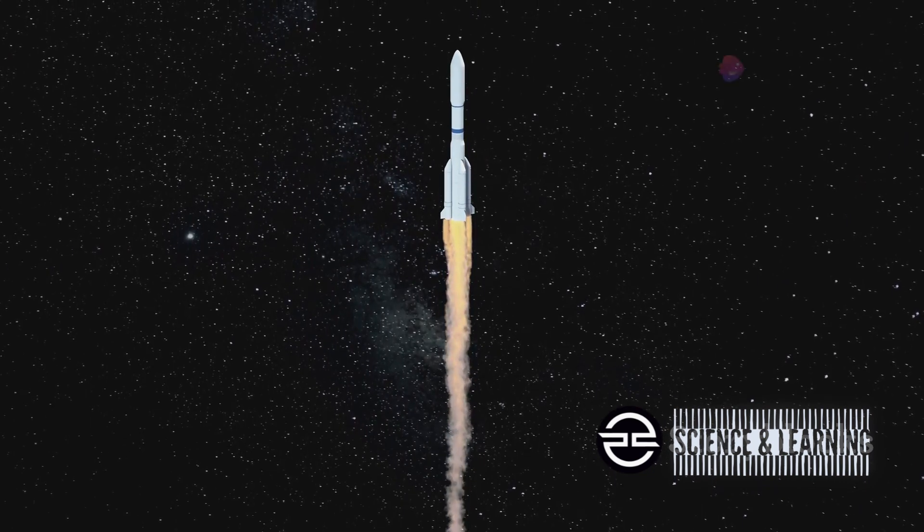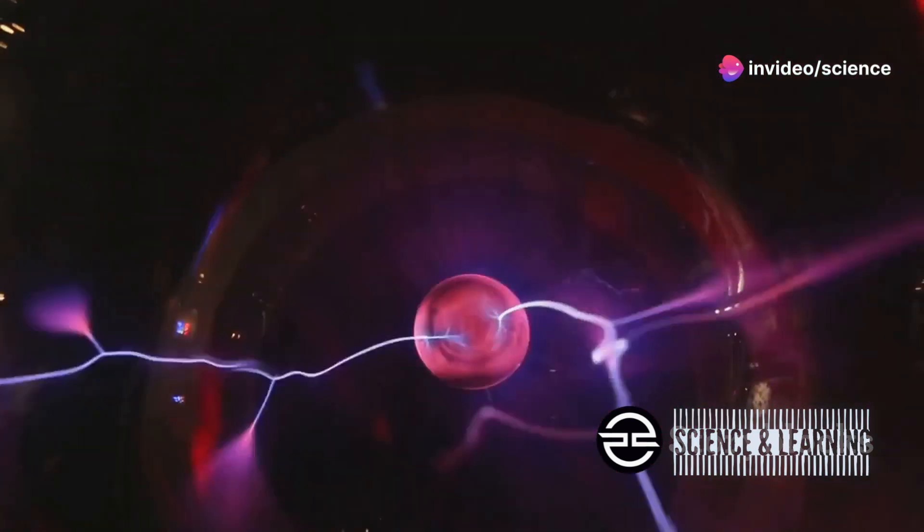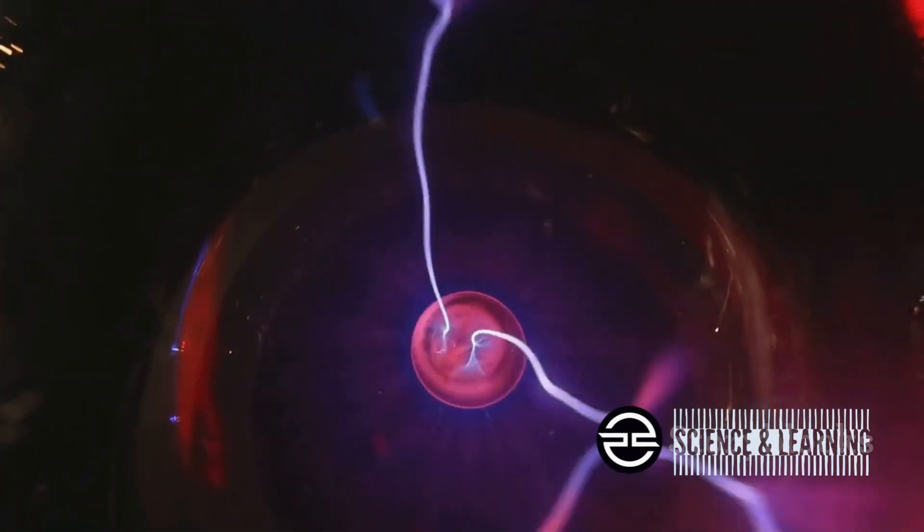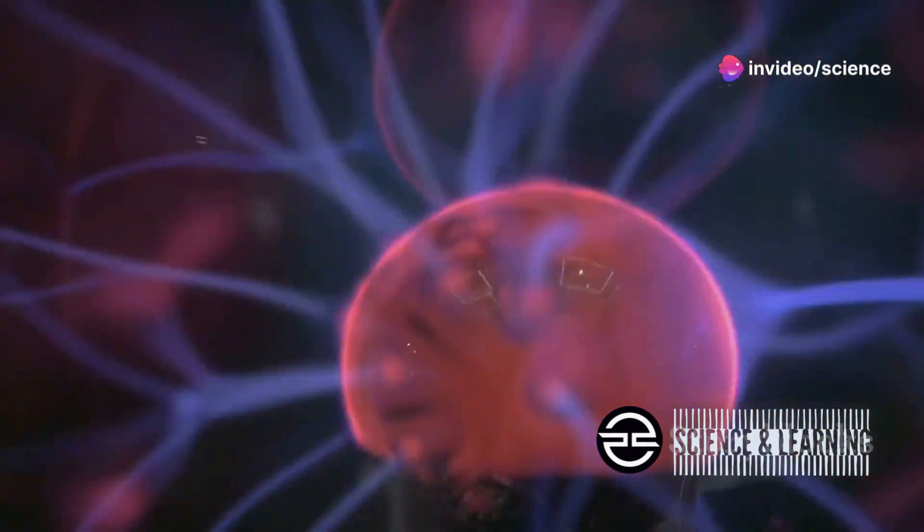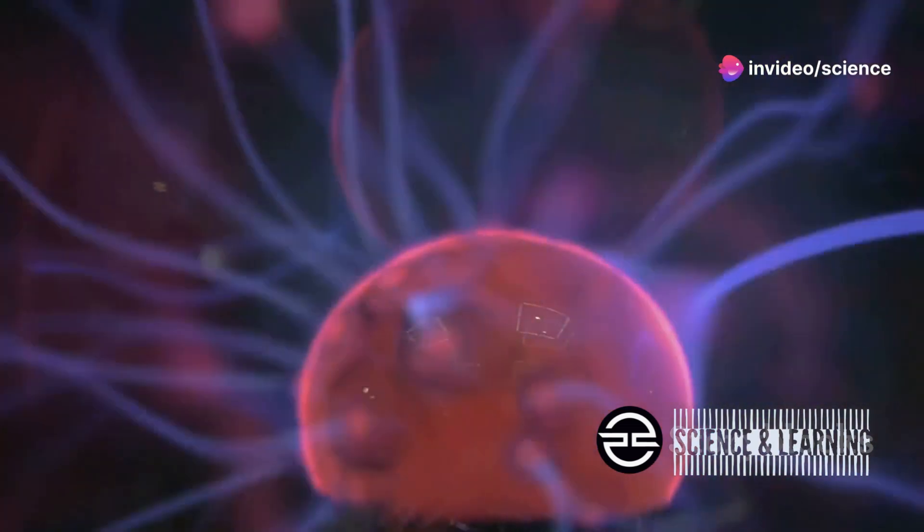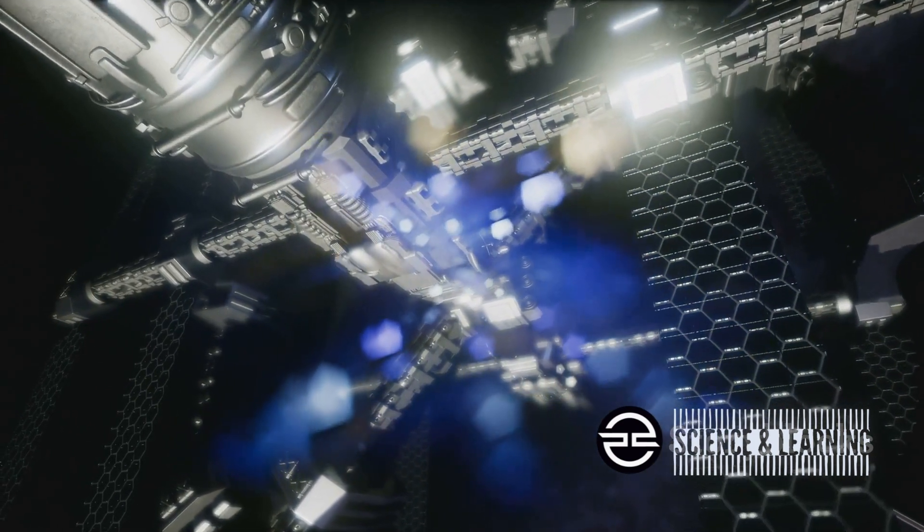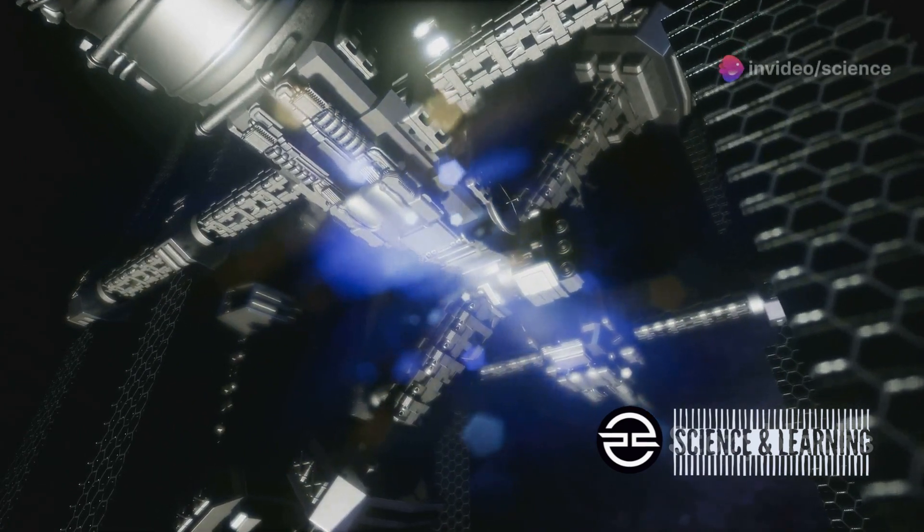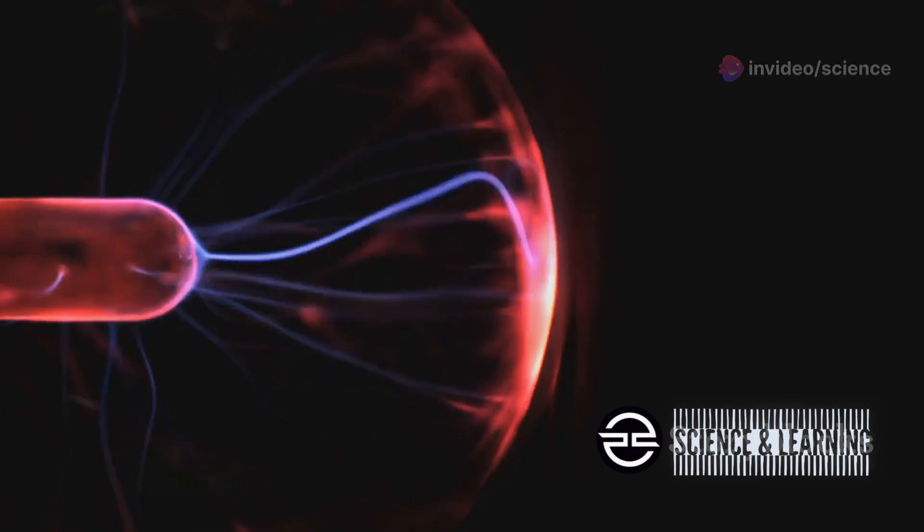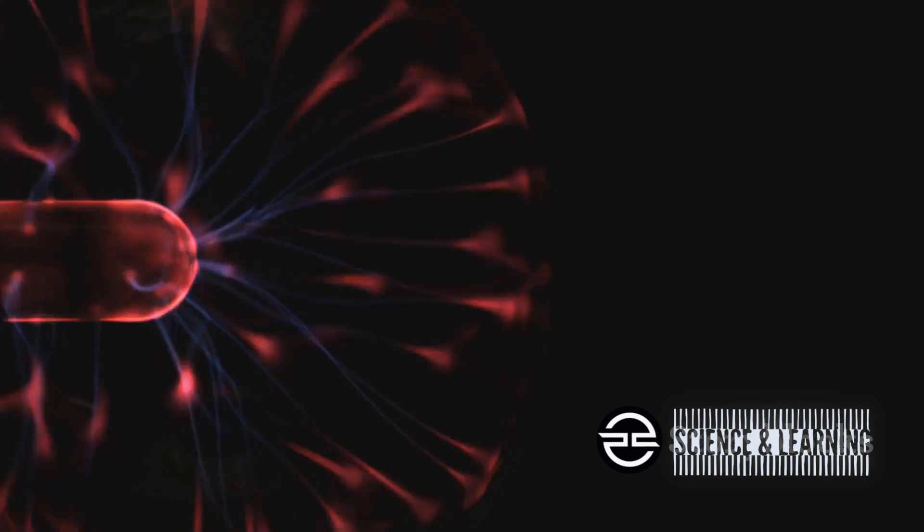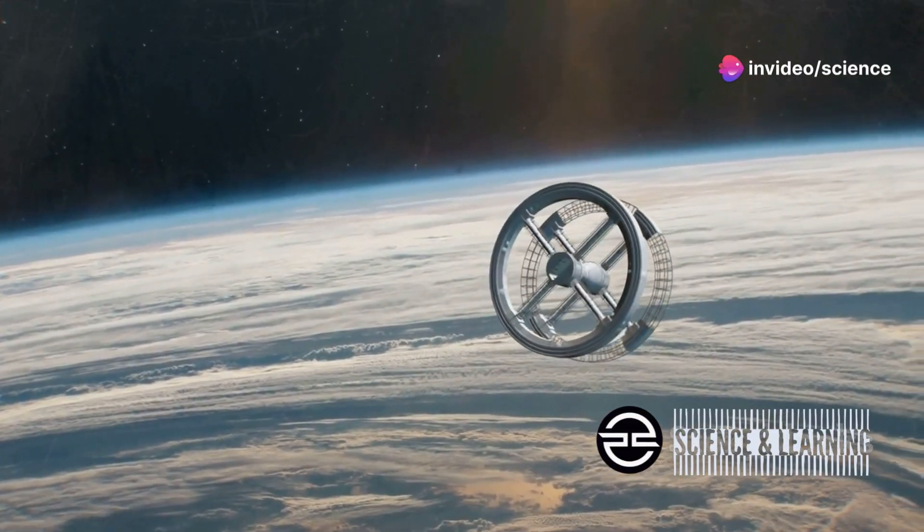At the heart of the pulsed plasma rocket lies an ingeniously designed system that harnesses the power of plasma. High voltage electrodes generate a powerful electric arc, stripping electrons from the gas atoms and transforming it into plasma. This plasma, now an electrically charged gas, is subject to the influence of magnetic fields. The rocket's design incorporates powerful magnets that create a magnetic field within the chamber, accelerating the plasma and expelling it out of the rocket's nozzle at incredibly high speeds. This expulsion of high velocity plasma generates thrust, propelling the spacecraft forward. By harnessing the fundamental forces of electromagnetism, the pulsed plasma rocket achieves remarkable levels of efficiency and thrust, paving the way for a new era of space travel.